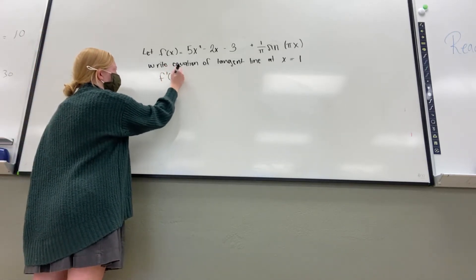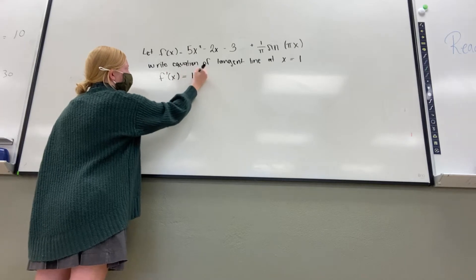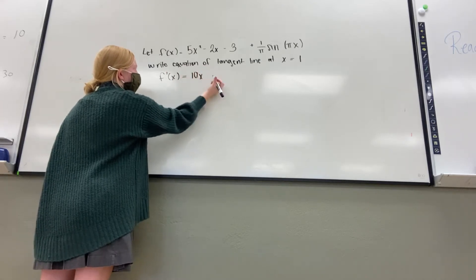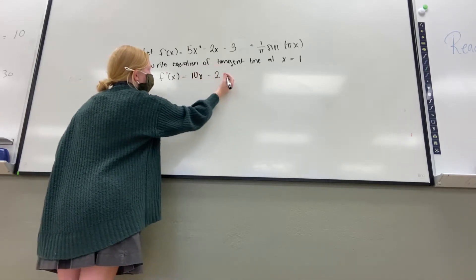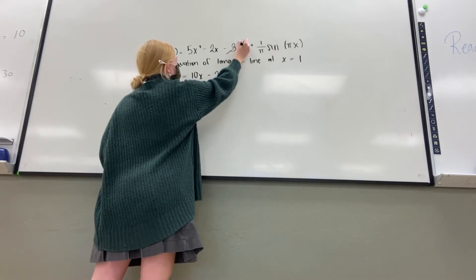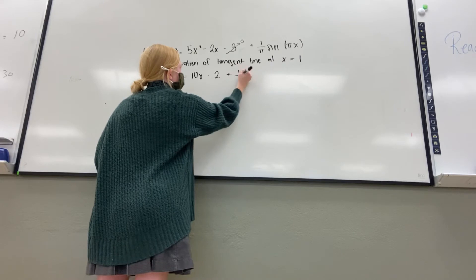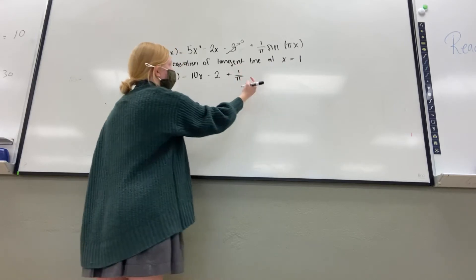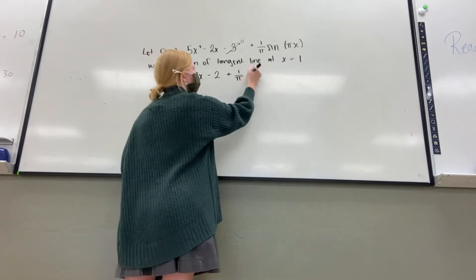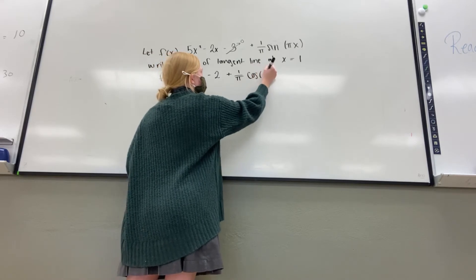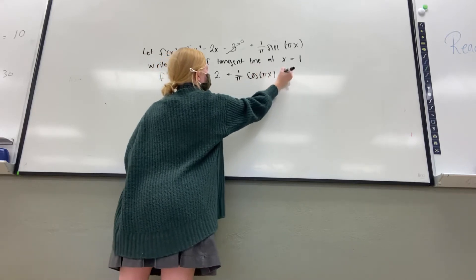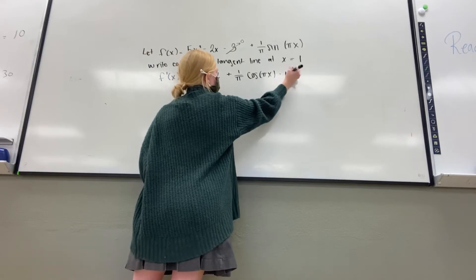f prime of x, so we use the power rule to get 10x and 2, and then 3 is a constant, so its derivative is 0, plus 1 over pi, and then the derivative of sine is cosine, and then we chain on the inside, which would just be pi.